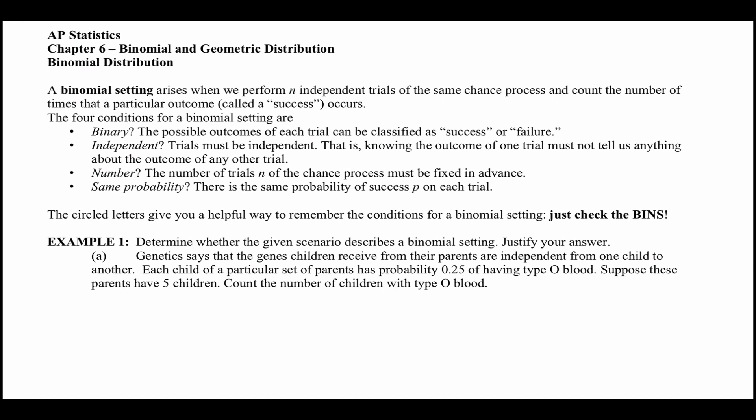The number N — the number of trials must be fixed. I have to know when I end. If I know when I end, then it's a fixed number. The last one is S — same probability. There always has to be the same probability throughout the process. I can't change the probability. So kind of like how we had earlier in the year with SOCS, this is another one: B-I-N-S, bins.